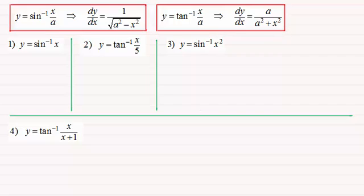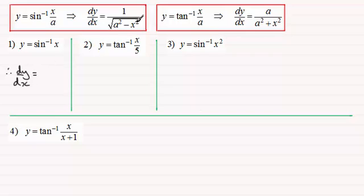Okay, welcome back. For this first one, y equals the inverse sine of x. Comparing it to the result we have, the constant a is clearly 1, so this is a nice easy one to start with. Therefore dy/dx equals 1 divided by the root of 1 squared, which is 1, minus x squared. So the answer is 1 over the square root of 1 minus x squared.